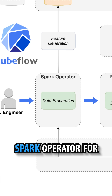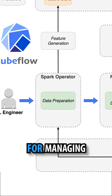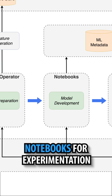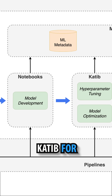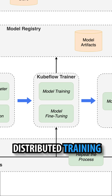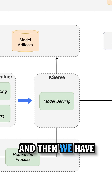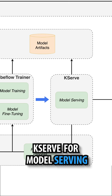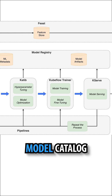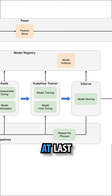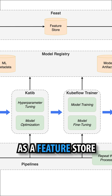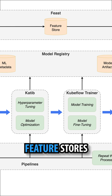We have Spark Operator for data preparation — managing and transforming big data. There are Notebooks for experimentation, Katib for hyperparameter tuning, and Qflow Trainer for distributed training or distributed fine-tuning of LLMs. Then we have K-Serve for model serving. You can also do all the automation with the Pipelines component, manage your own model catalog using Model S3, and use Feast as a feature store for both online and offline feature stores.